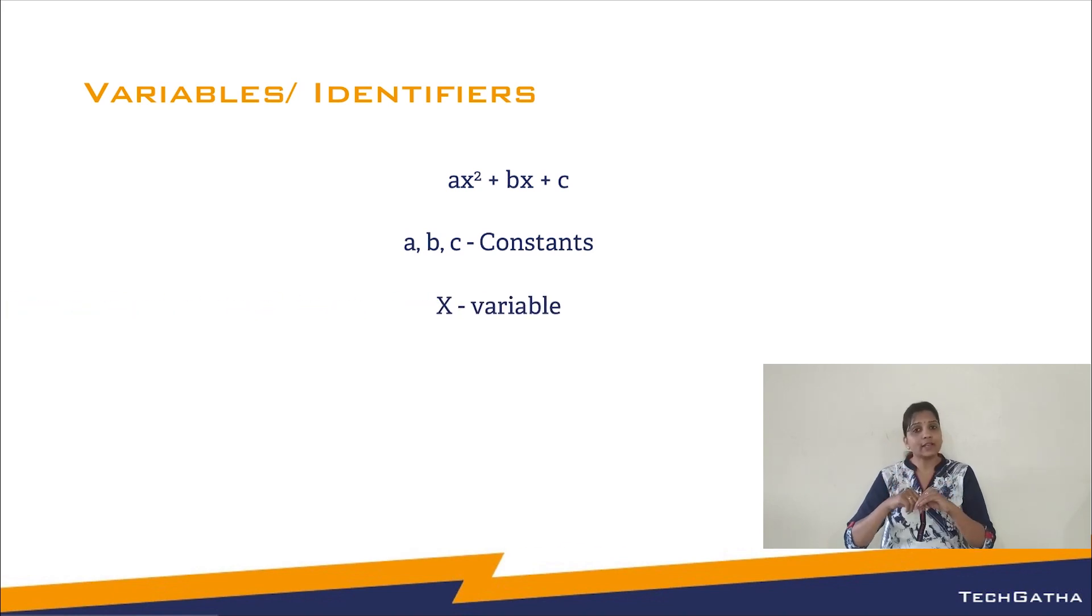Now why was x called as a variable? Because the values can vary in x. a, b, c are constant because in the whole expression, they remain the same.